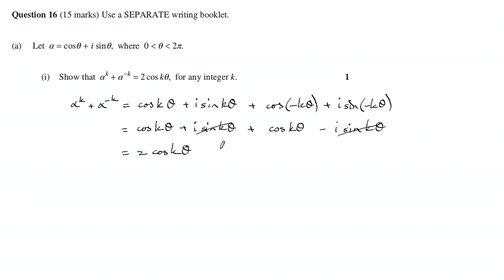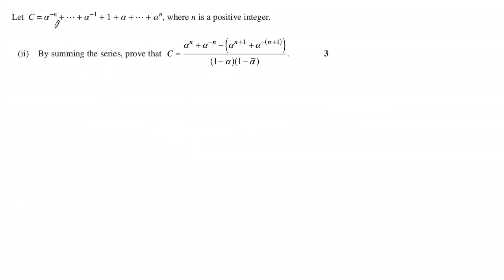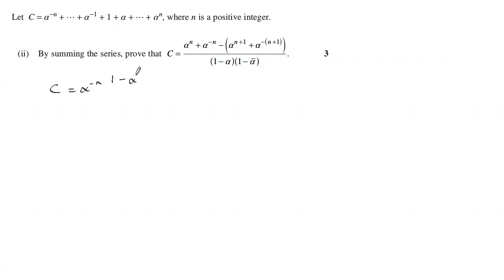Those imaginary parts cancel and we get 2cos(kθ). So that's it for part one. Part two. When they talk about summing the series, what they mean is that because this is a geometric series with a constant ratio of alpha, we can work out the sum using the formula: first term times one minus the constant ratio to the power of the number of terms.